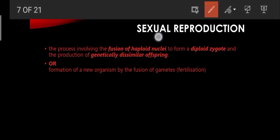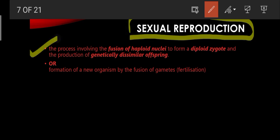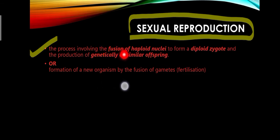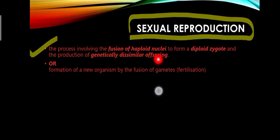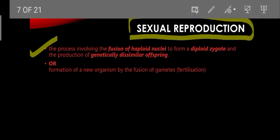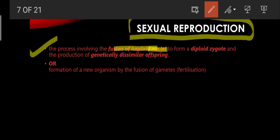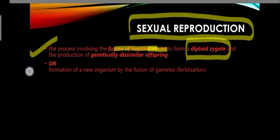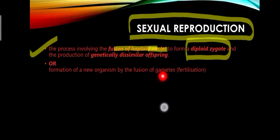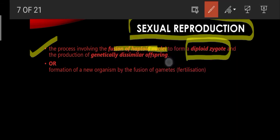Sexual reproduction is the process that involves the fusion of haploid nuclei to form a diploid zygote, resulting in the production of genetically dissimilar offspring. It can also be defined as the formation of a new organism by the fusion of gametes.